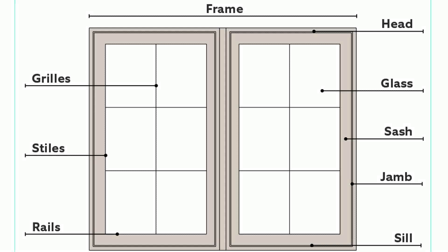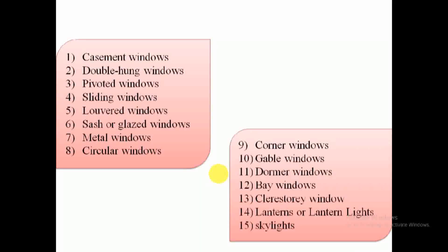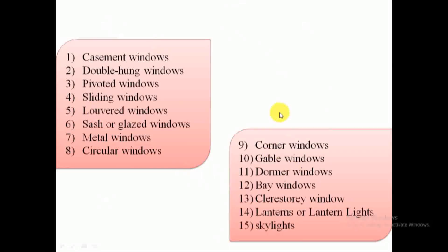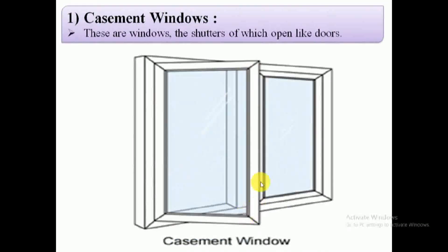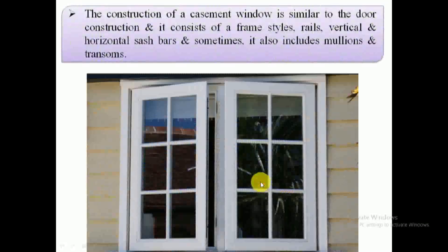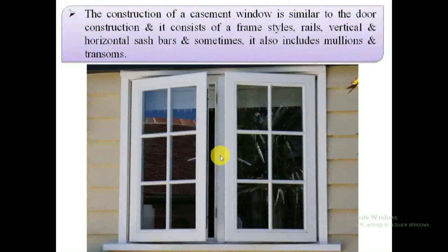Types of windows. Based on the nature of operational movements of the shutter, materials used in their construction, manner of their fixing, and their location, windows are classified as follows. 1. Casement windows. These are windows having shutters which are opened as the shutters of usual doors. The shutter consists of styles, top rails, bottom rails, intermediate rails, etc. The panels may be either glazed, unglazed, or partly glazed and partly unglazed.